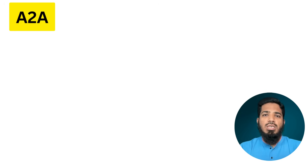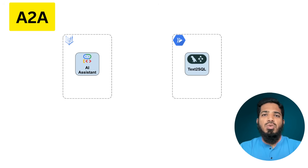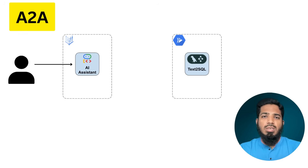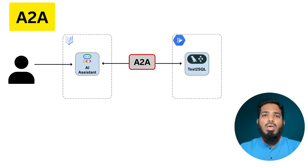Let's understand this with an example. Suppose I have two agents. My first agent is an AI assistant developed using Google ADK and deployed on Vertex AI Agent Engine. The second agent is a text-to-SQL agent, developed using LangGraph and deployed on Cloud Run. Now a user submits a request to AI assistant, and if AI assistant needs to prepare a SQL query, it can benefit from the text-to-SQL agent. In A2A terminology, AI assistant is called the client agent and text-to-SQL agent is the remote agent.